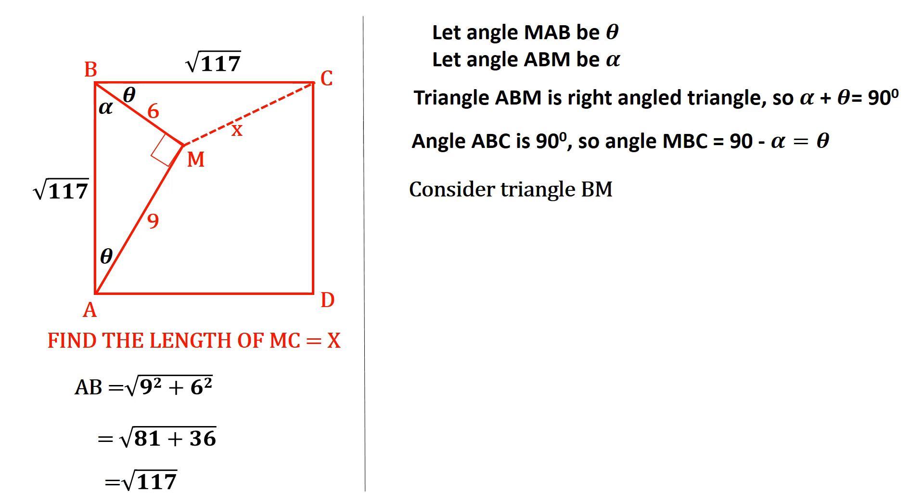Let us consider triangle BMC, which is a scalene. To get one of the sides, in this case the length MC, we're going to employ the cosine rule. So X squared is going to be equal to 6 squared plus the square root of 117 squared minus 2 times 6 times the square root of 117 times cos theta.